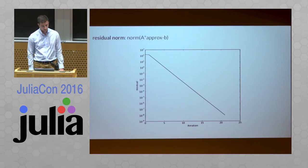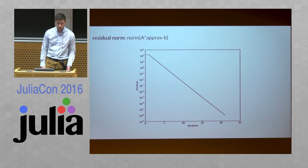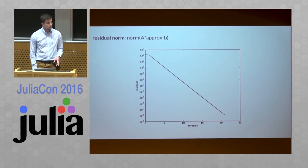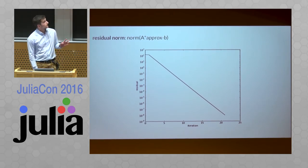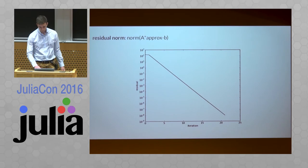Here we can see a plot where at each iteration this method reduces the residual norm. So at some point it stops, when it's good enough.